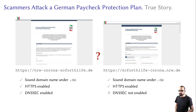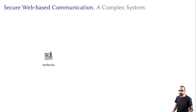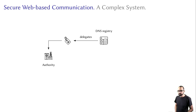So why do users trust such scamming websites again and again? To understand that, we need to review how secure web-based communication is structured. If you are an authority and want to go online, the first step is to have a domain name delegated to you. This can be under an open namespace such as .com, .org, or .net, where anyone can register a name, or under a restricted top-level domain with eligibility requirements such as .gov, which is reserved only for governmental organizations in the US.